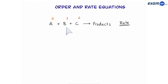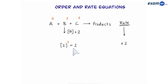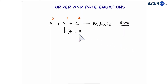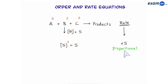Let's move on to first order — so B in this case. If I double the concentration of B, we're going to have two to the power of one, which equals two. So the rate is going to be multiplied by two. This is proportional to what happened to B — we doubled B, and the rate doubled. How about if we times the concentration of B by five? Five to the power of one is five, and therefore the rate will times by five. Again, proportional to what happened to B. So a reactant that has first order has a proportional effect on the rate of reaction.